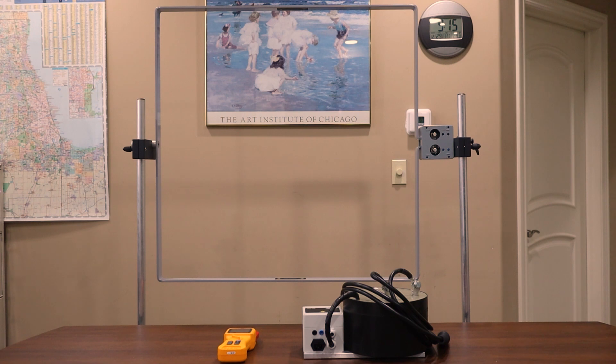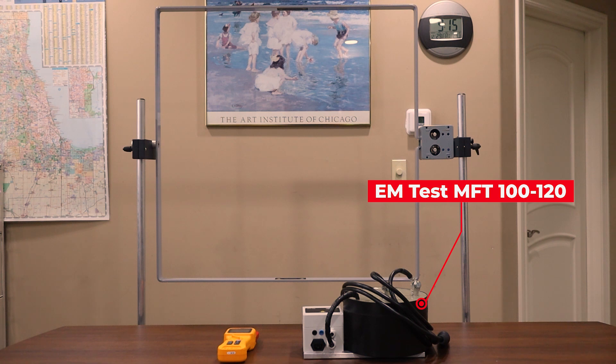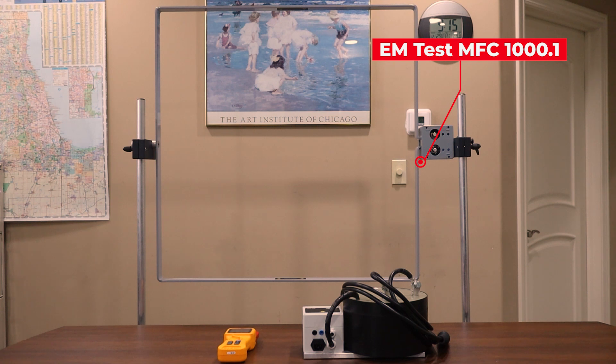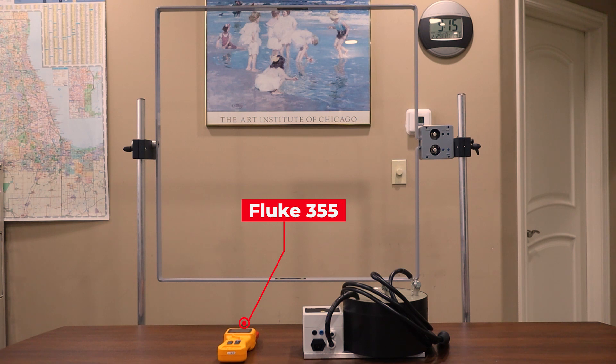The equipment that we're going to be using for today's video is the EM test MFT 100 magnetic field transformer and the MFC 1000-1 meter coil for magnetic field testing. You'll also notice later we'll show the Fluke 355, which can be used to measure the current going through our coil.